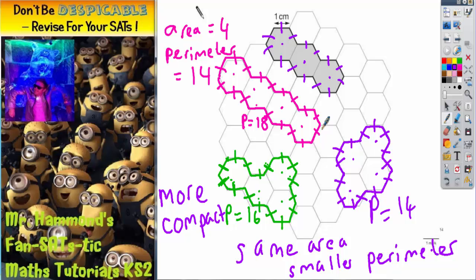If it's stretched out like this one here, 4 hexagons in a straight line, it will end up having a longer perimeter. More compact will give you the smaller perimeter.